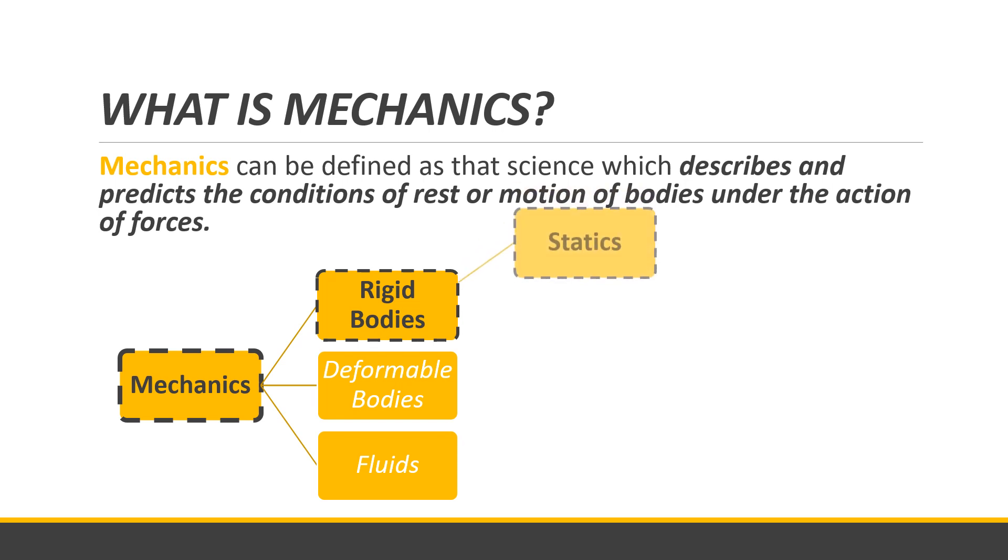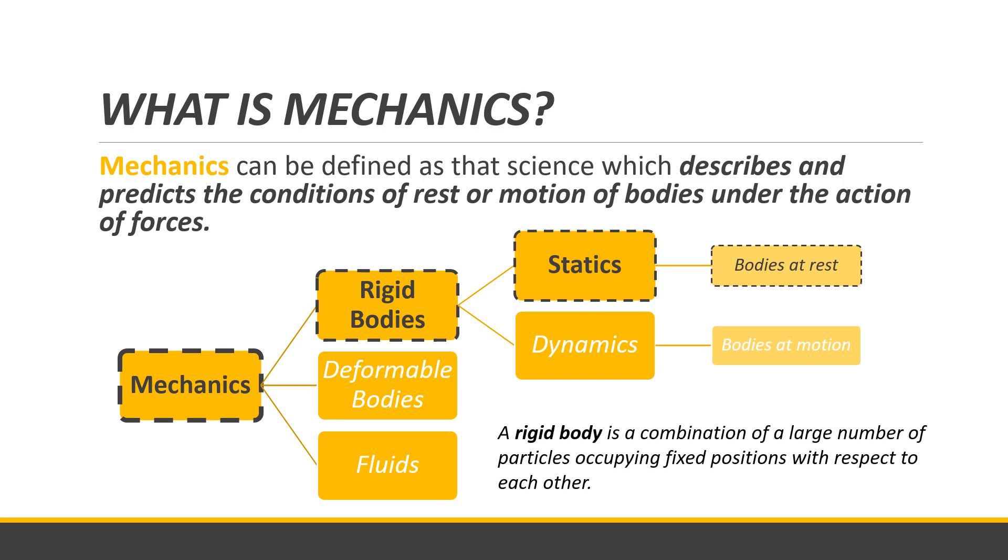Since we are on rigid bodies, rigid bodies is also subdivided into statics and dynamics, where statics is dealing with bodies at rest and dynamics, which we will take up on ENS162, deals with moving bodies or bodies at motion. Our subject is all about statics under rigid bodies of mechanics. A rigid body is a combination of large number of particles occupying fixed positions with respect to each other. Speaking of static or rigid, it is a body that is at rest or not moving.